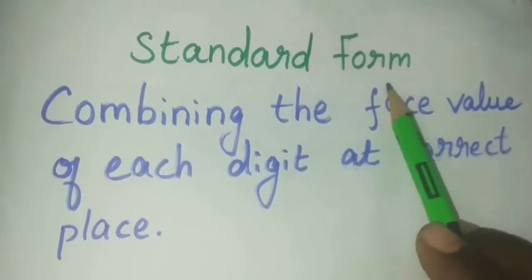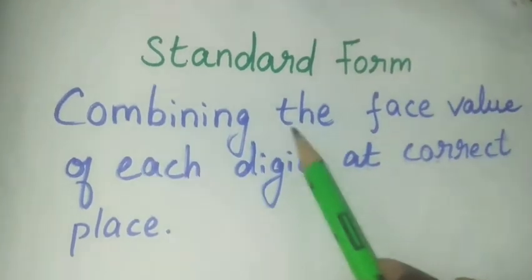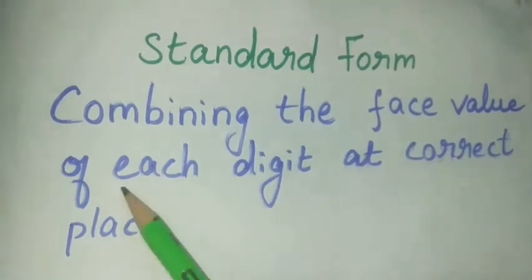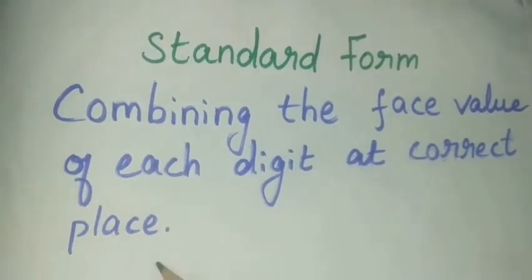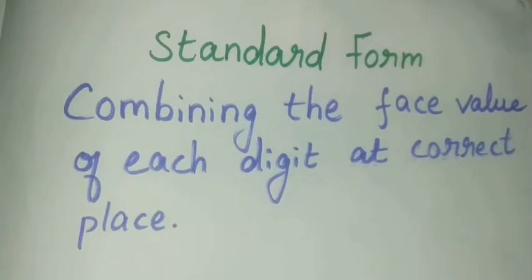Expanded form is combining the face value of each digit at correct place. Let us see with an example.